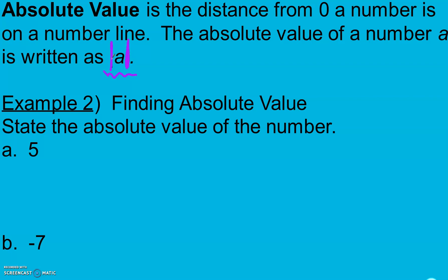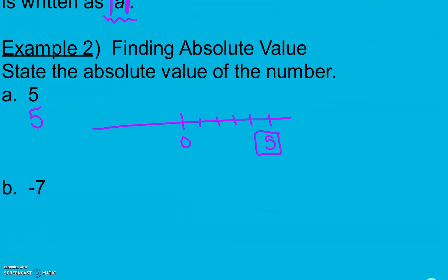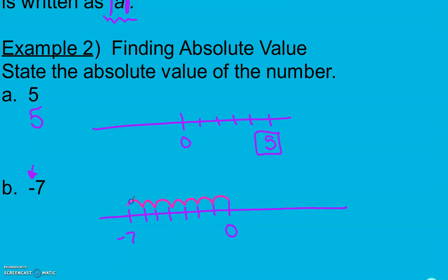For number 2, 5 is 5 units away from 0 on a number line. It happens to be to the right, but that doesn't matter — the absolute value is 5. Negative 7 on a number line is 7 units to the left. We count just the places; we want to know it's just 7 units. Direction doesn't matter — it's just how far away. For absolute value, our answers are always going to be positive or 0. We'll never have a negative absolute value as our final answer because distance is never negative.